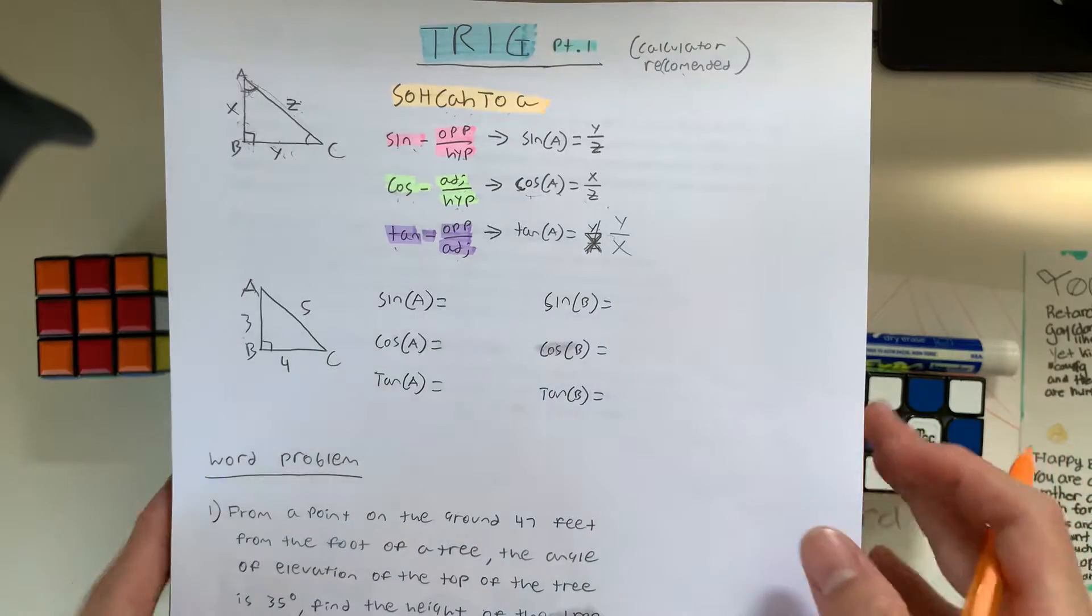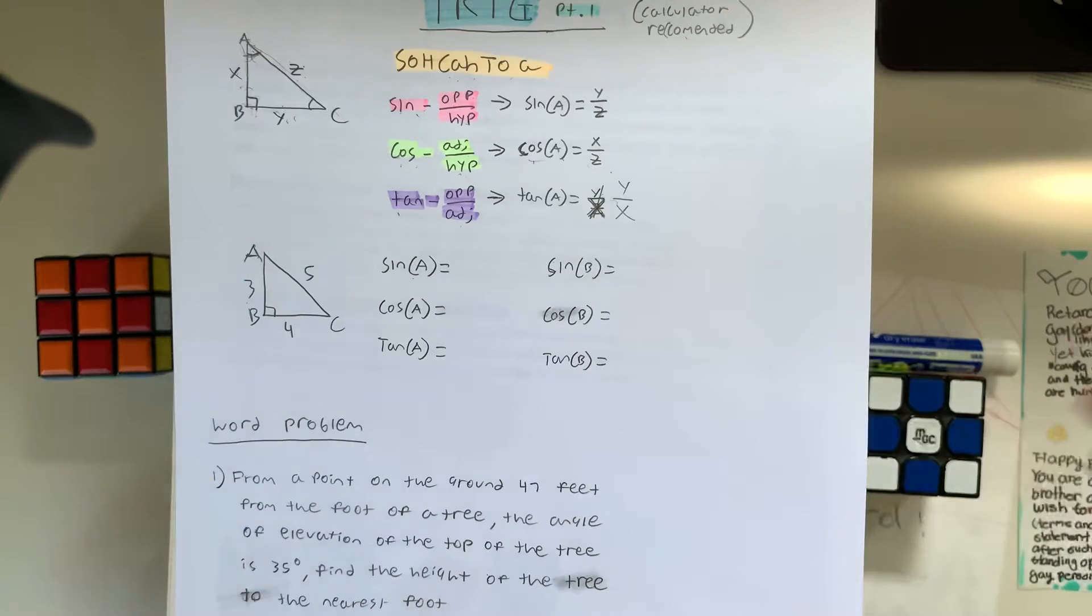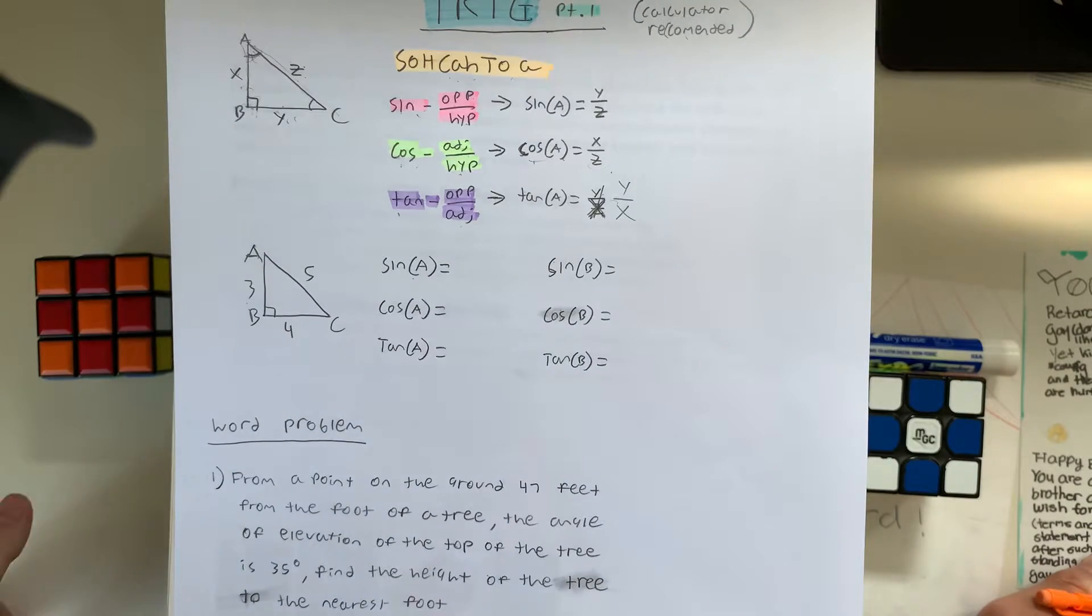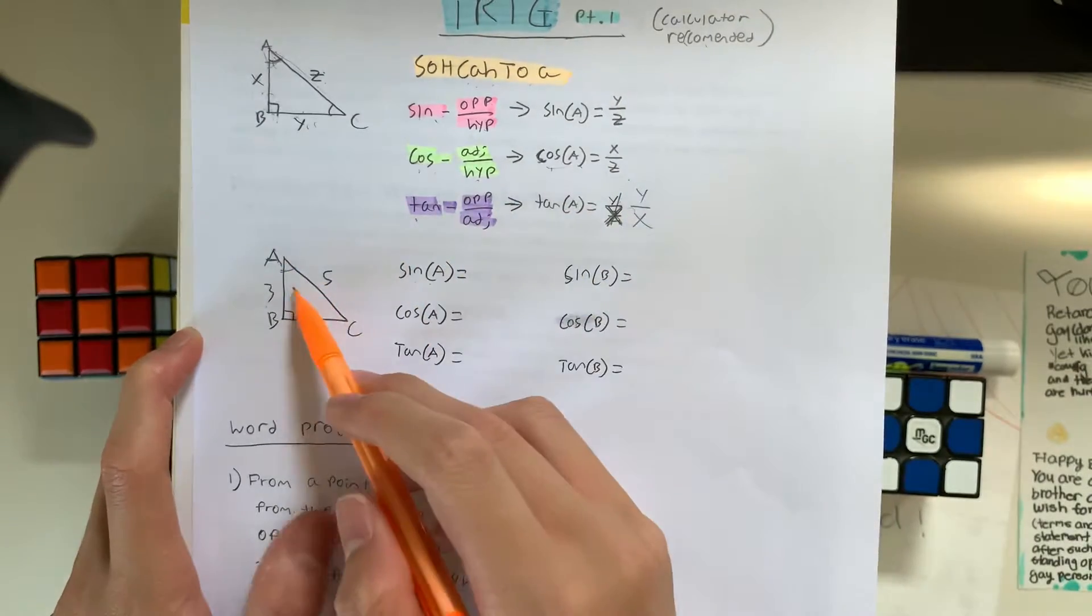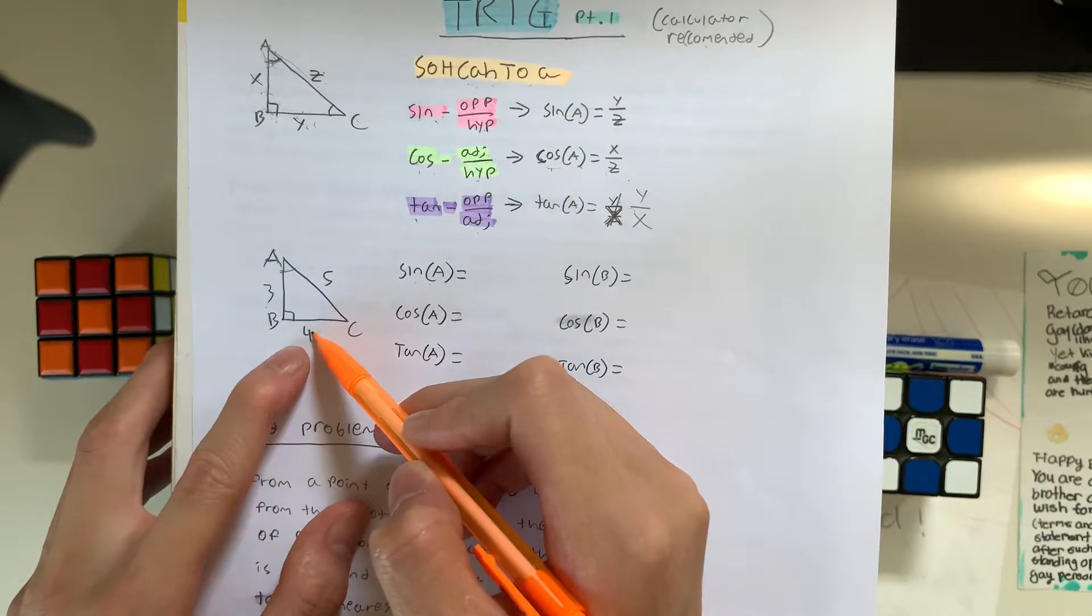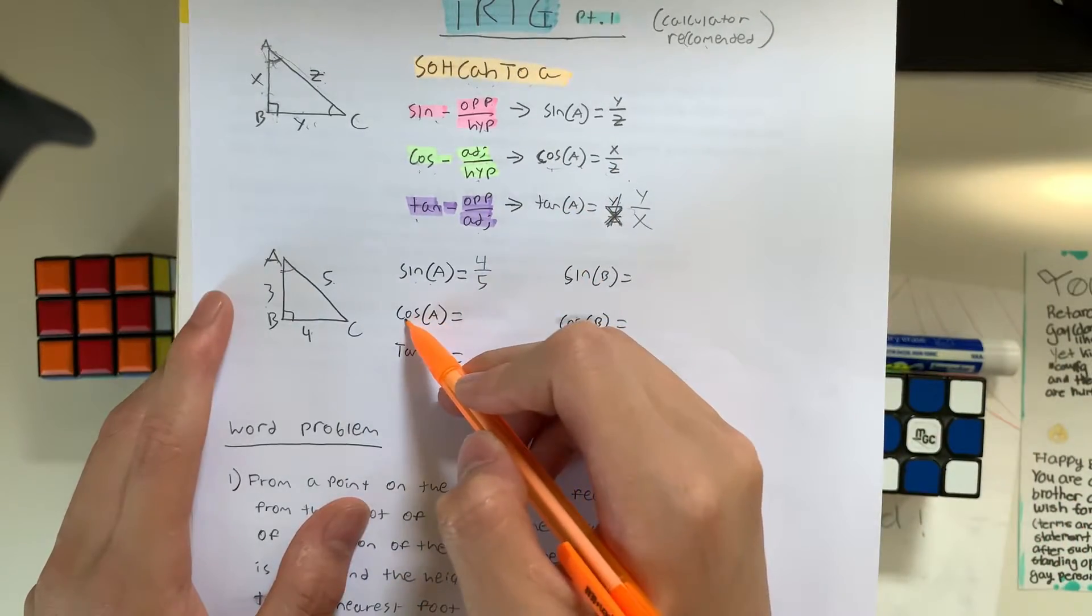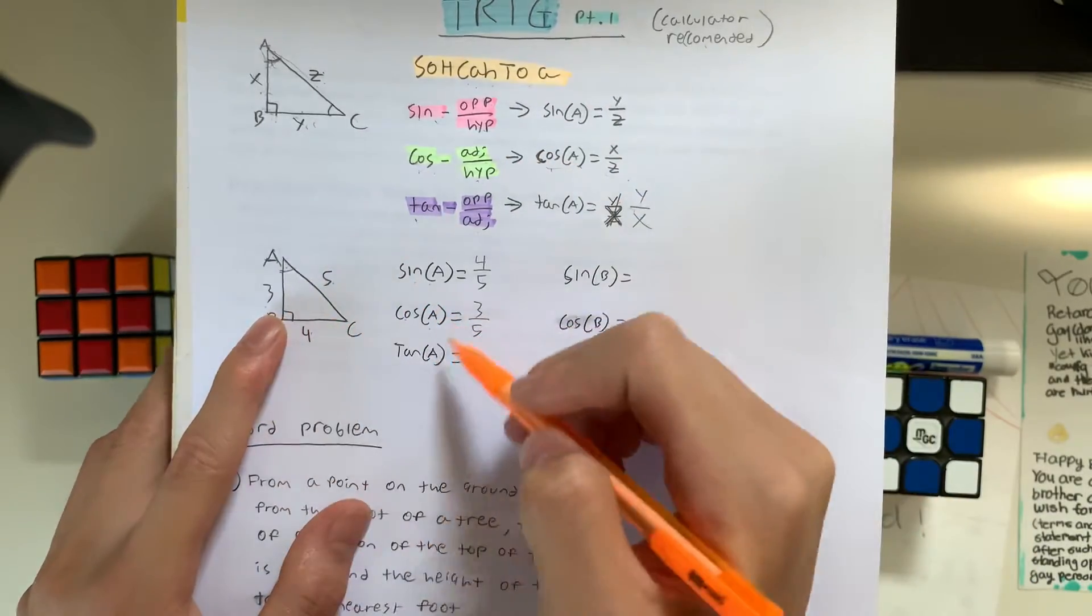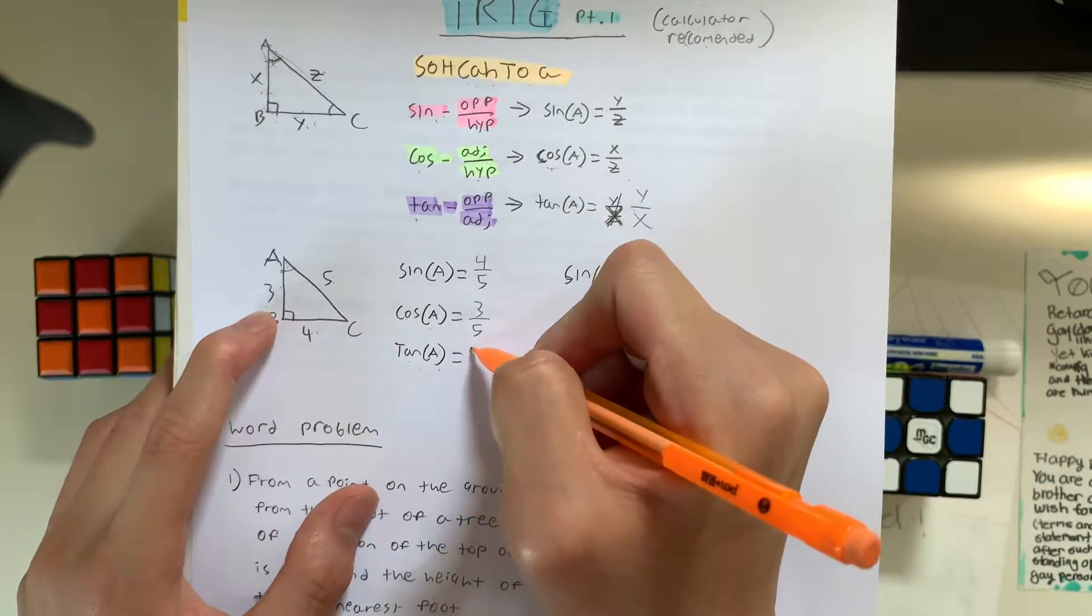Alright guys. So try this example right here. So what is sine of A? I'll give you guys 10 seconds or so if you want to pause the video. But if not, you guys can just watch as I do this. So what's sine of A? This is angle A right here. So sine is opposite over hypotenuse. So that's 4 over 5. Cosine of A is adjacent over hypotenuse, 3 over 5. And lastly, we have tangent of A, opposite over adjacent. So the answer for this is 4 over 3.